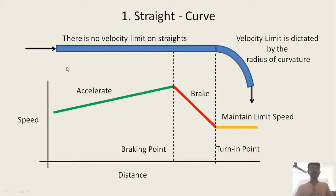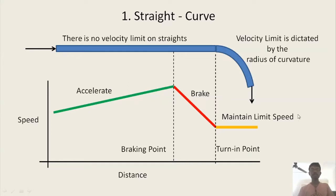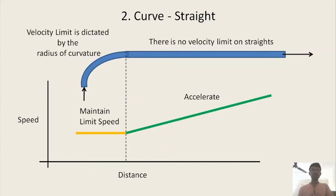In Case 1, there is a straight piece of track followed by a curve. You accelerate along the straight, then brake at the right point and maintain the proper speed into the corner. In Case 2, you are exiting the corner and laying down the straight - you first maintain the limit speed and then once clear of the corner you start accelerating.